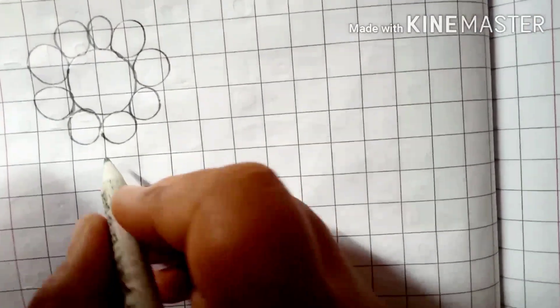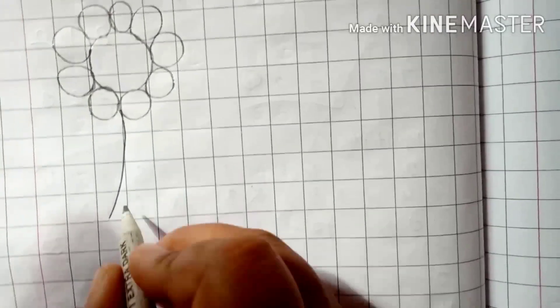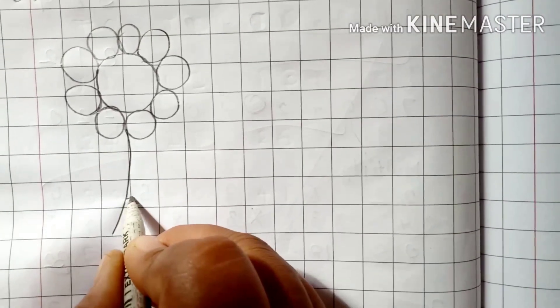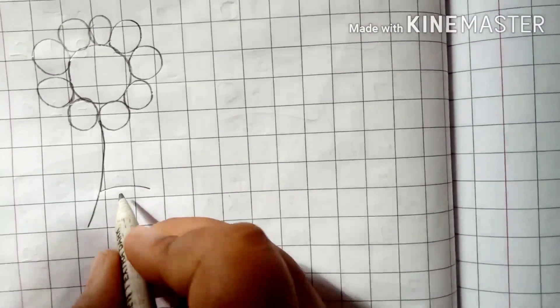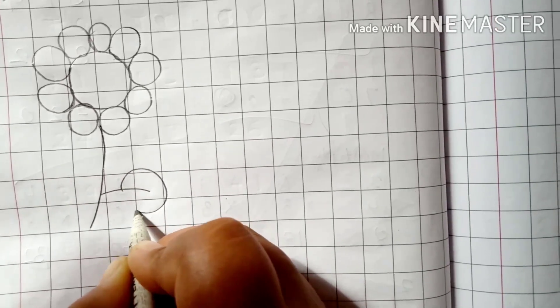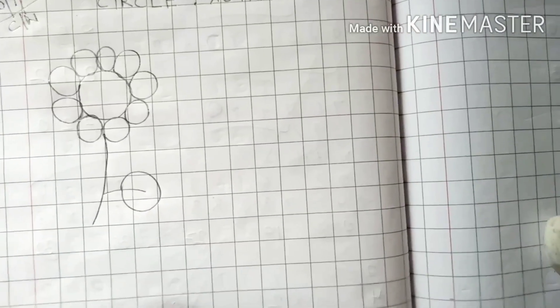You can draw as many as you want. Now, we will give the stem, like this. Draw a line, a curved line. We will give the leaf. You can make it with the shape of circle also. See, like this.